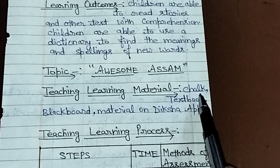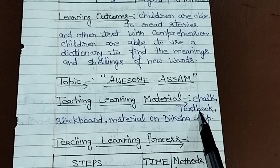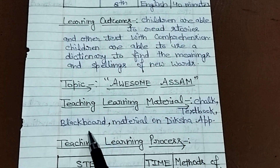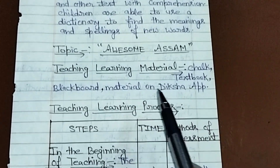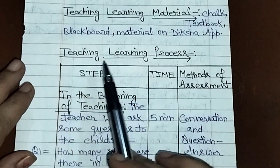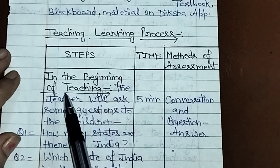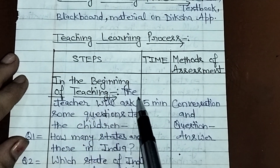Teaching learning material: Chalk, textbook, blackboard, and material on the Diksha app. Teaching learning process: In the beginning of teaching, the teacher will ask some questions to the children.